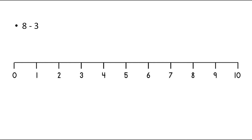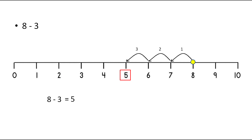The first one is 8 minus 3. We have to point out the first number, that is 8, and then we have to move towards left 3 steps because here we have to subtract 3 from 8. The first move is on 7, the second move is on 6 and the third move is on 5. As we have reached on the number 5, the answer of 8 minus 3 is 5.